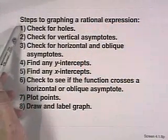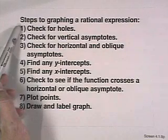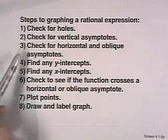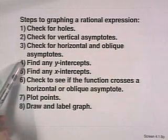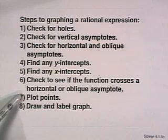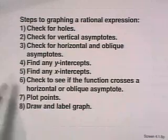You've seen in this section several important characteristics of rational functions. Let's review. The steps to graphing a rational function are: first check for holes by making sure the function is in lowest terms; then check for vertical asymptotes, horizontal and oblique asymptotes; then plot some points including any y and x intercepts; check to see if the function crosses a horizontal or oblique asymptote; and plot as many other points as you need to draw and label your graph. Create your own problems and use your graphing calculator to test yourself regularly until you have expertise in deciding whether a function has asymptotes.